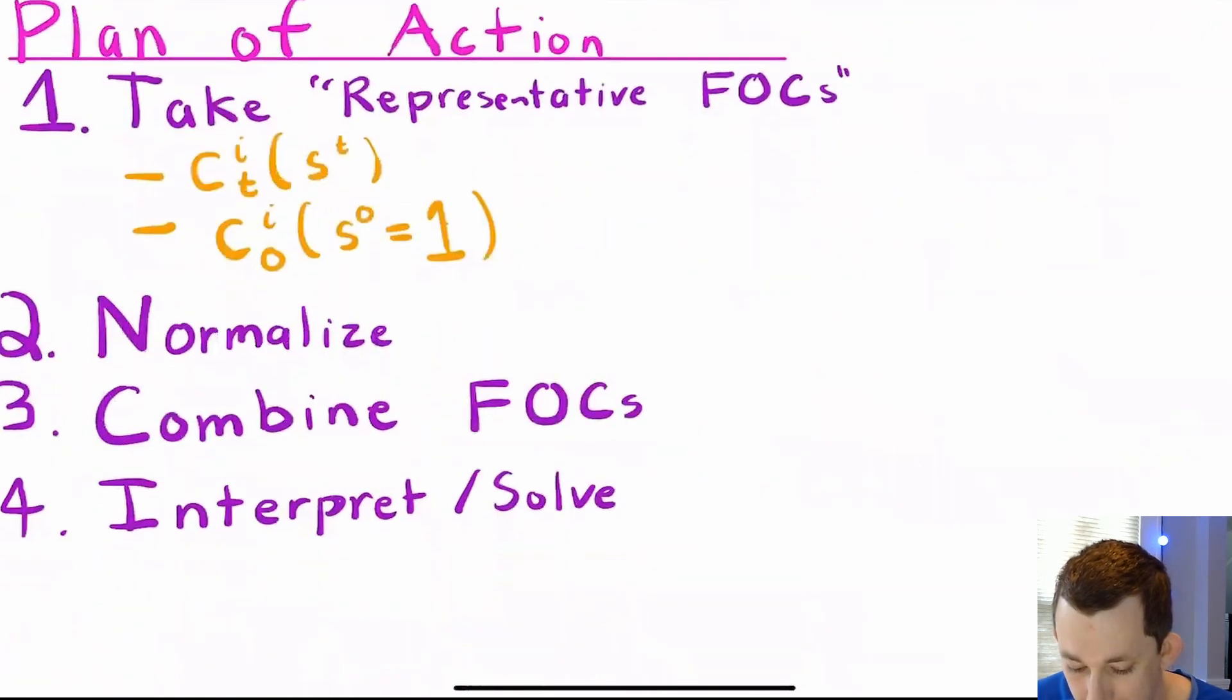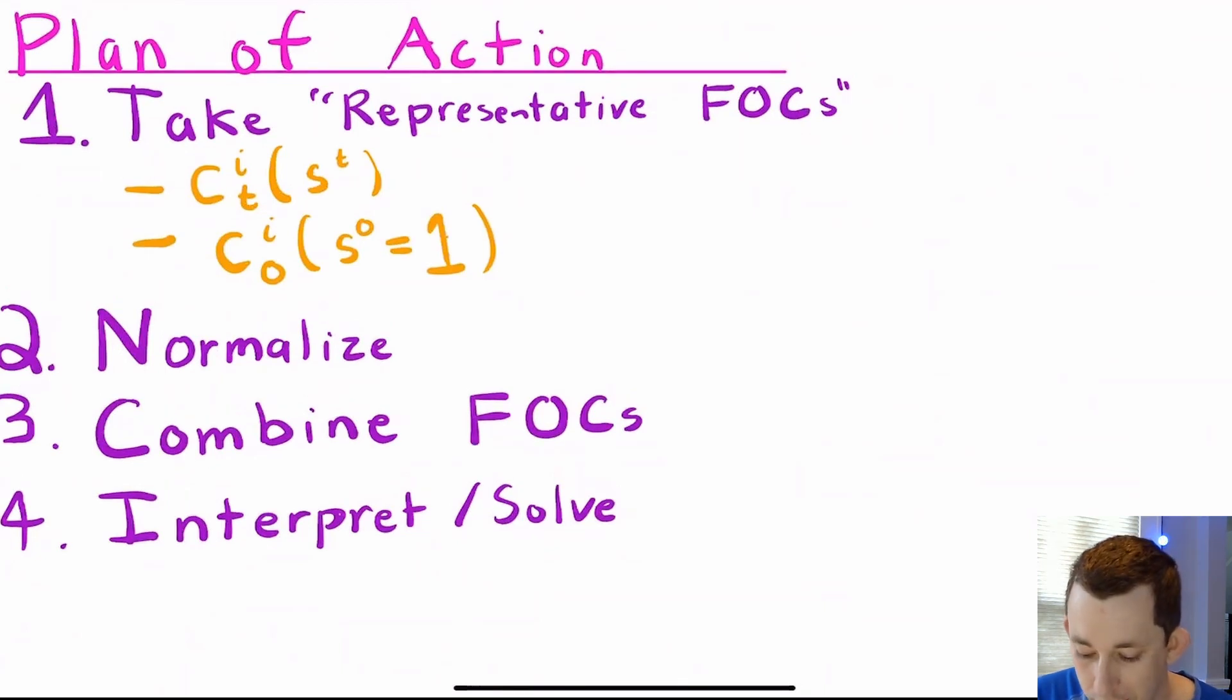Let's go on to talk about our plan of action. Our plan of action is going to have three steps. First, we are going to take what are called representative first order conditions. So we'll take a first order condition for C_i^t of an event history s^t. And then we are going to take a first order condition for time zero for a given person i for an event history where the first period or t equals zero weather is one or such.